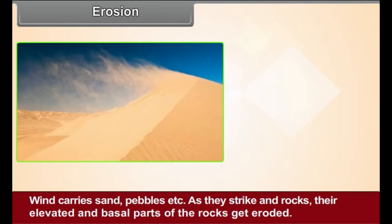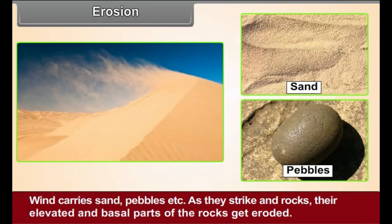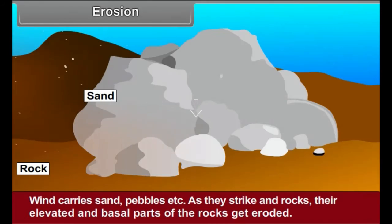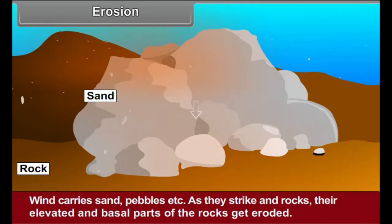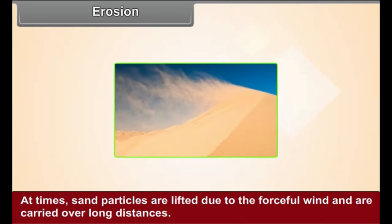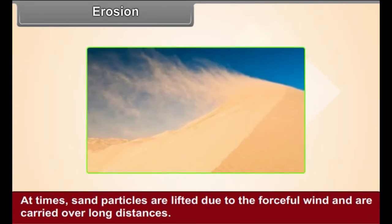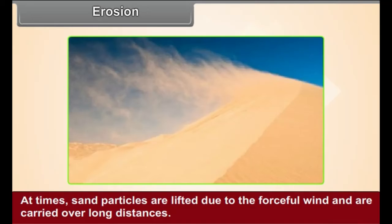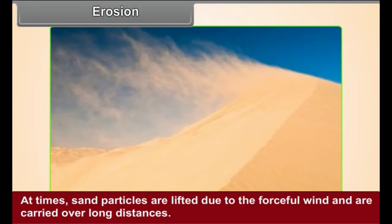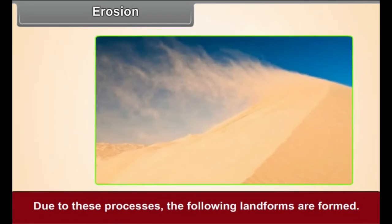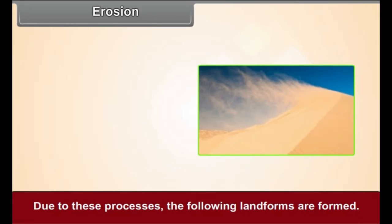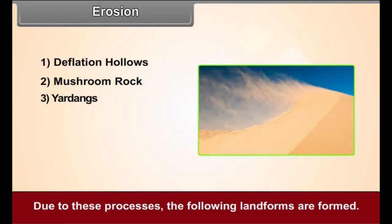Erosion: Wind carries sand, pebbles, etc. As they strike and scratch the rocks, the elevated and basal parts of the rocks get eroded. At times, sand particles are lifted due to forceful winds and are carried over long distances. Due to these processes, the following landforms are formed.